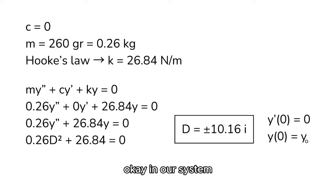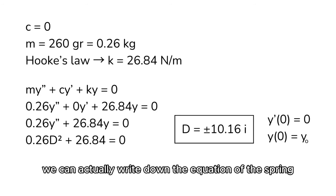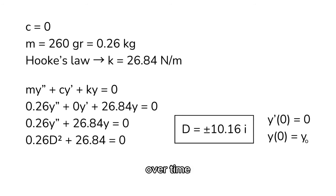Okay, in our system, we know that the spring is released from rest, from a position above or below the equilibrium. From rest means that y prime of zero is zero. It wasn't given an initial push or anything like that. It was just released from rest. So, initial position is y0 and initial velocity is zero. With that, we can actually write down the equation of the spring over time.